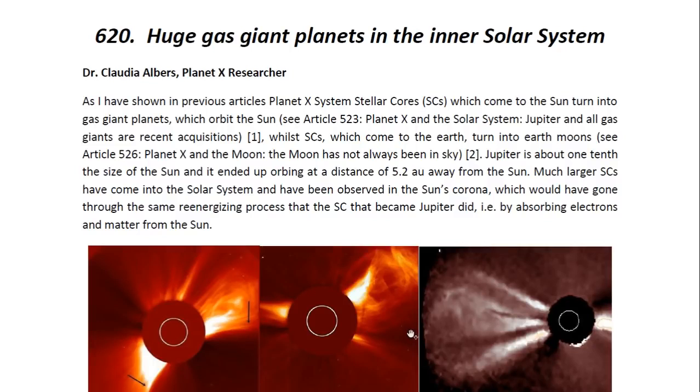Now, as I have shown in previous articles, Planet X system stellar cores which have come to the Sun turn into gas giant planets, which then orbit the Sun. And you may look at Article 523, Planet X in the Solar System, Jupiter and all gas giants are recent acquisitions. While stellar cores which come to the Earth turn into Earth moons. And you may look at Article 526, Planet X in the Moon, the Moon has not always been in the sky for more details.